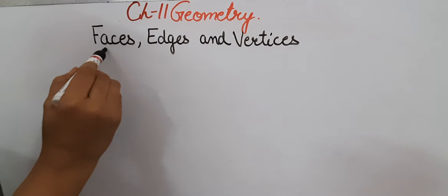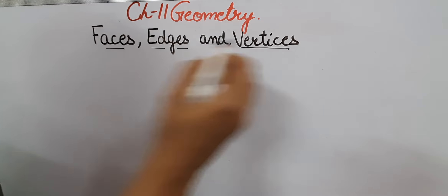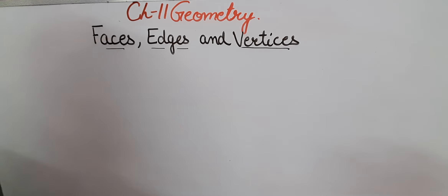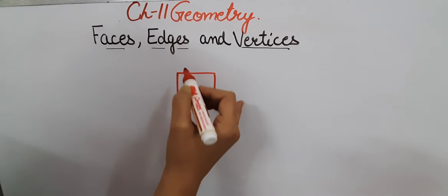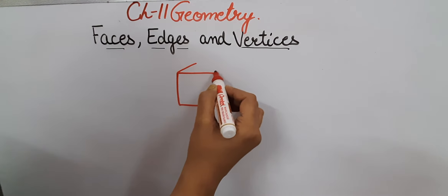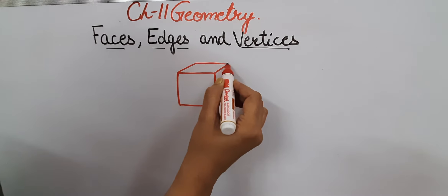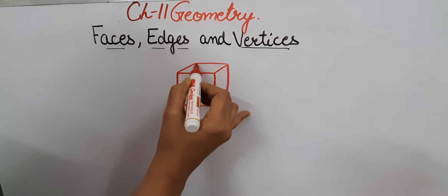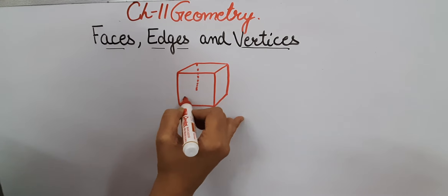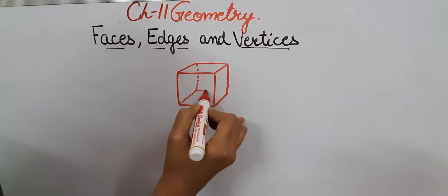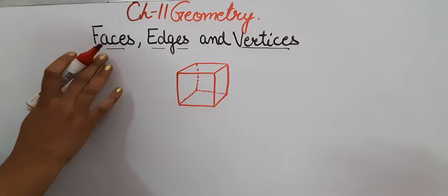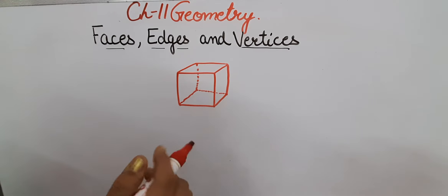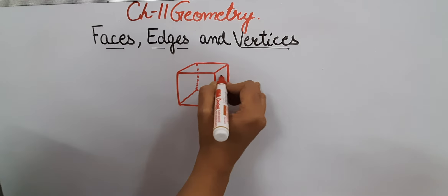Now let us understand faces, edges and vertices. Let's take a shape — I am taking a solid figure that is a cuboid. This is a square, but if I draw it as a three-dimensional shape like a dice which you use in Ludo or to play Snake and Ladders, that is the cube shape which I am drawing here. Now, what is a face of a shape? A face is the flat surface of the cube.